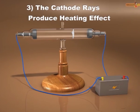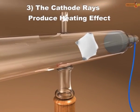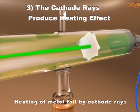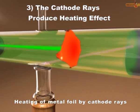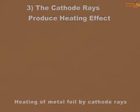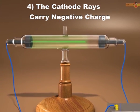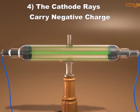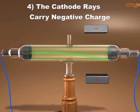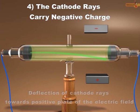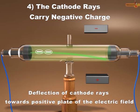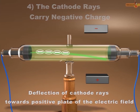The cathode rays produce a heating effect. When cathode rays strike a metal foil, it becomes hot. The cathode rays carry negative charge. When an electric field is applied, the cathode rays are deflected towards the positive plate of the electric field. This shows that the charged particles in the cathode rays carry negative charge.